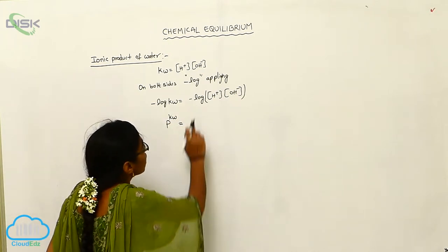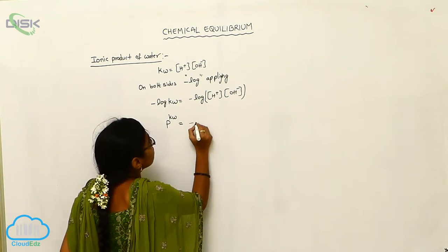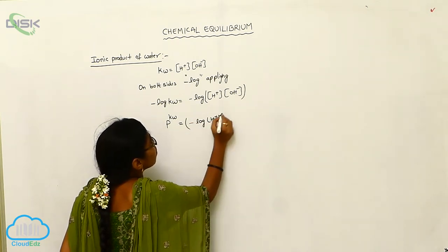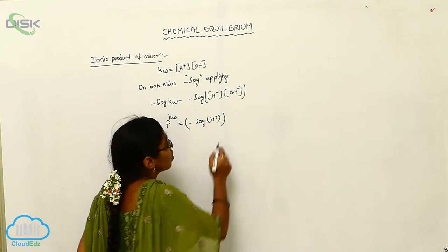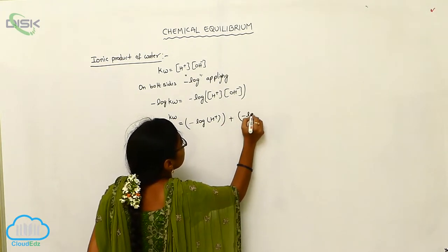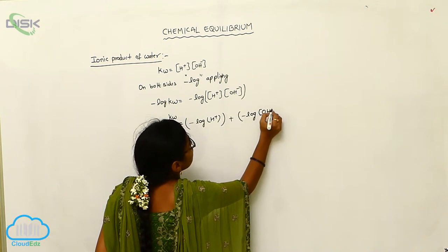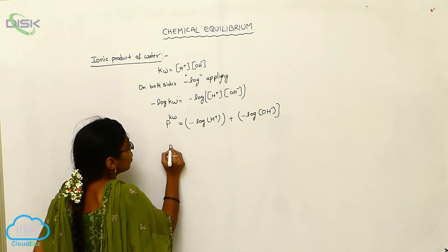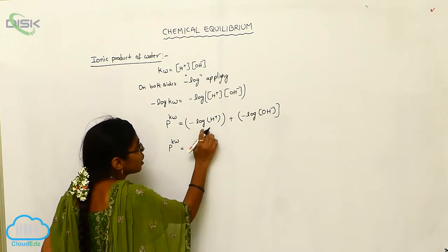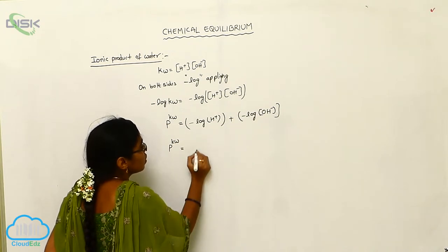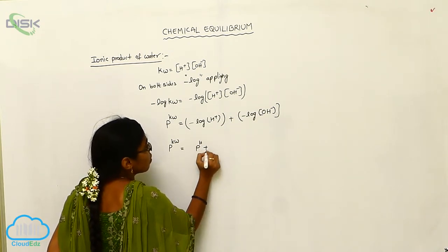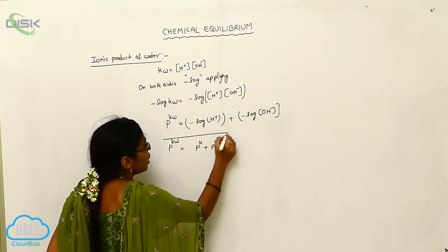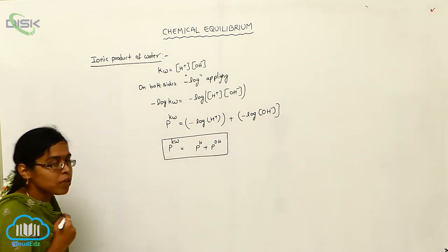Using the logarithm property log(AB) = log A + log B, we can write: pKW = minus log[H⁺] + minus log[OH⁻]. Therefore, pKW = pH + pOH.